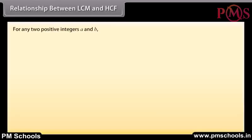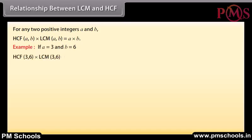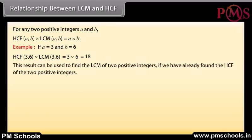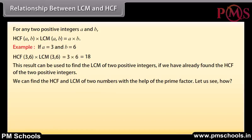Relationship between LCM and HCF: For any two positive integers A and B, HCF(A,B) multiplied by LCM(A,B) is equal to A into B. For example, if A equals 3 and B equals 6, HCF(3,6) into LCM(3,6) equals 3 into 6, which equals 18. This result can be used to find the LCM of two positive integers if we have already found the HCF. Find the LCM and HCF of 510 and 276.